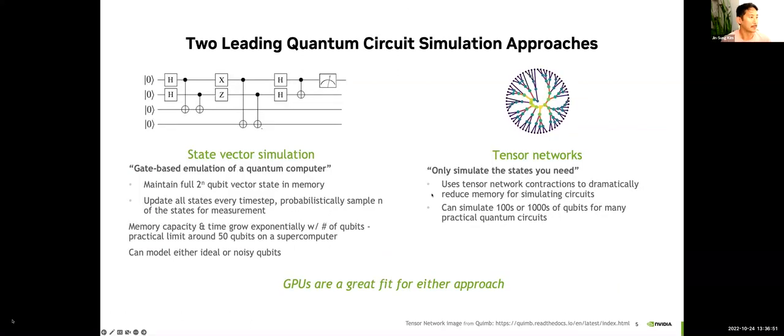Let's dive into the two leading quantum circuit simulation approaches today. The first one is the state vector simulation method, which I'm sure everyone here is familiar with. This is the gate-based emulation of a quantum computer where you maintain the full two to the n vector state in memory. Every time you apply a quantum gate, you update the state vector in time. This is a very powerful technique for simulating quantum circuits. You can simulate very deep circuits, very entangled circuits, but there is a hard memory trade-off in that every time you add a qubit, you double the required memory to simulate your system. There is a practical limit of about 50 qubits even on a supercomputer.